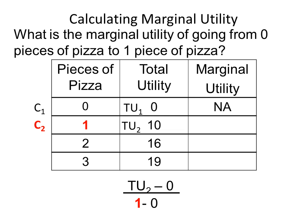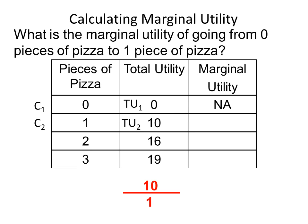We substitute C2, which is one piece of pizza, into the formula. Since the total utility associated with consuming one piece of pizza is 10, we replace TU2 with 10. Then we subtract TU1 from TU2: 10 minus 0 equals 10. We subtract C1 from C2: 1 minus 0 equals 1. Dividing 10 by 1 gives us 10. We transfer the value 10 into the marginal utility column.